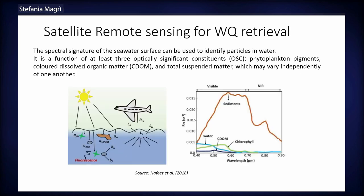On the other hand, remote sensing and Earth observation can provide fast and economic — when considering freely available data — and most of all a synoptic view of the situation. Remote sensing, and in particular optical remote sensing, measures the solar energy reflected by the Earth's surface. Different objects and features have a unique spectral response called a spectral signature. The seawater surface has a spectral signature that depends on its optically significant constituents: phytoplankton pigments, colored dissolved organic matter, and suspended matter.